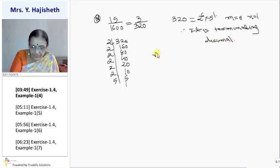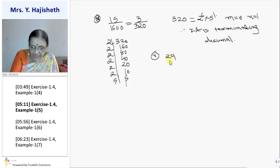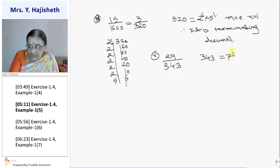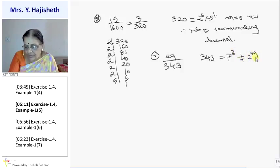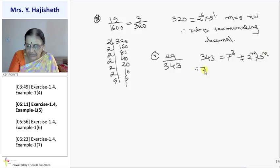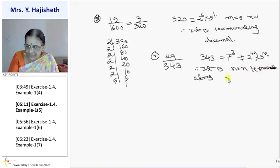The fifth sum: you are given 29 by 343. We can express 343 as 7 into 7 into 7, which is 7 cube. This is not equal to 2 raise to m into 5 raise to n. Therefore it is non-terminating recurring.